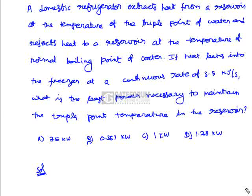The maximum temperature T1 is the normal boiling point of water, which is 100°C = 373.15 K. The lower temperature T2 is the triple point of water, which is 0.01°C = 273.16 K. Heat leaks into the freezer at 3.5 kJ/s, so we must provide a refrigerating effect of 3.5 kW.